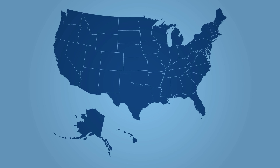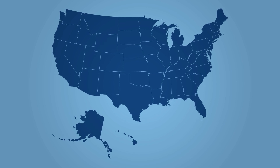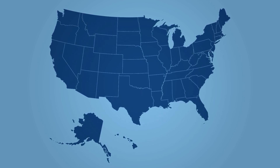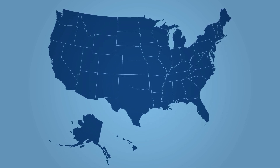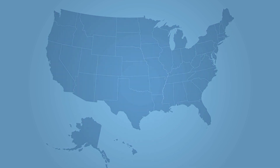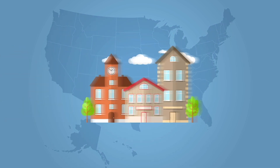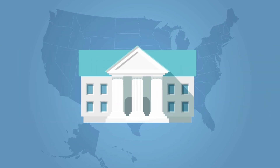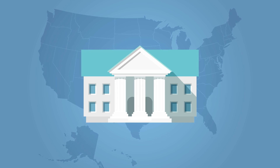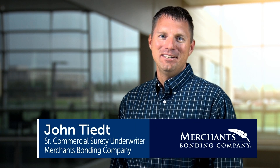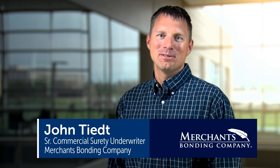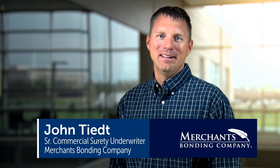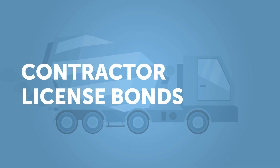In most states across the U.S., contractors are required to have a surety bond as a condition of licensing. The bonds may be required at the local, county, or state level. The party who requires the bond is called the obligee. Hi, I'm John Teet, senior commercial underwriter at Merchants Bonding Company. Today, we will discuss contractor license bonds.